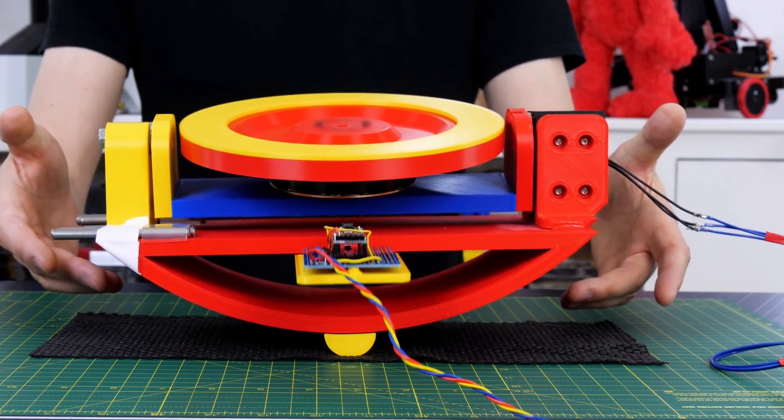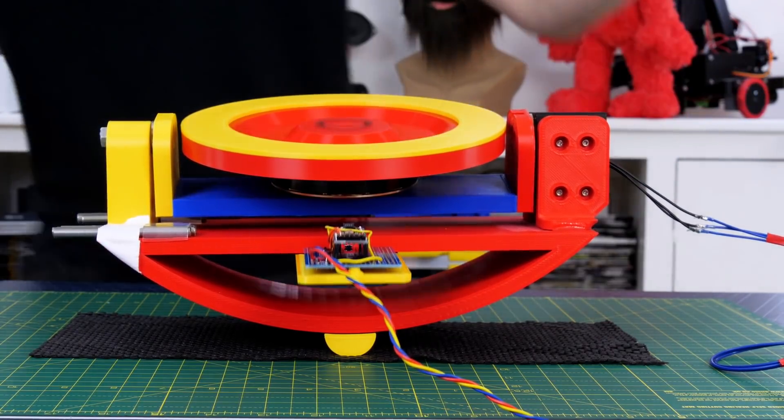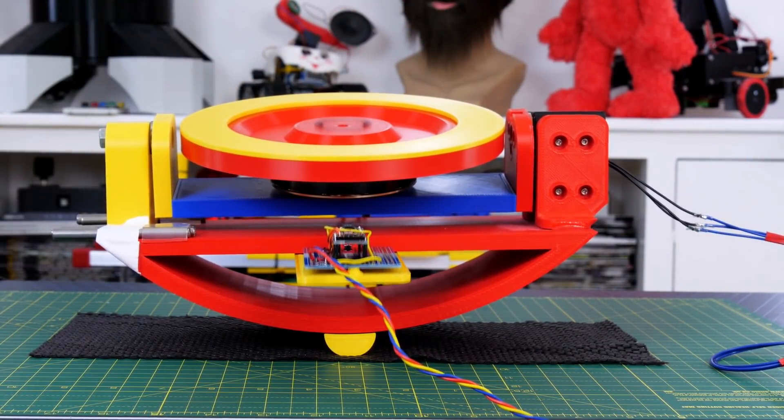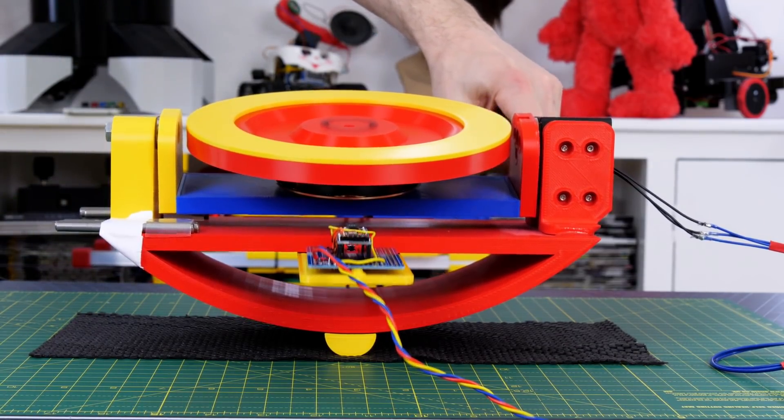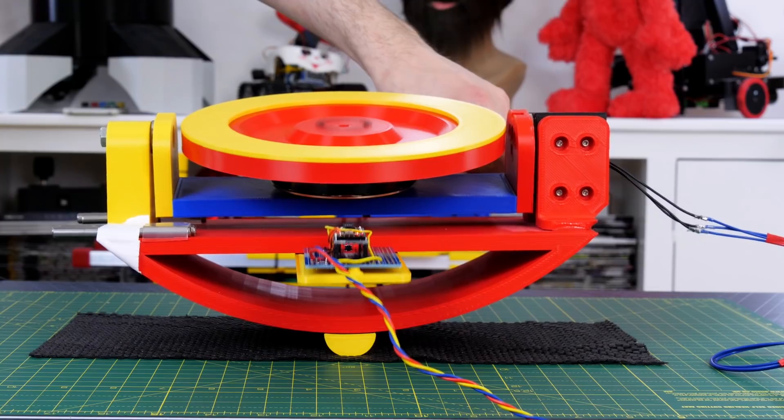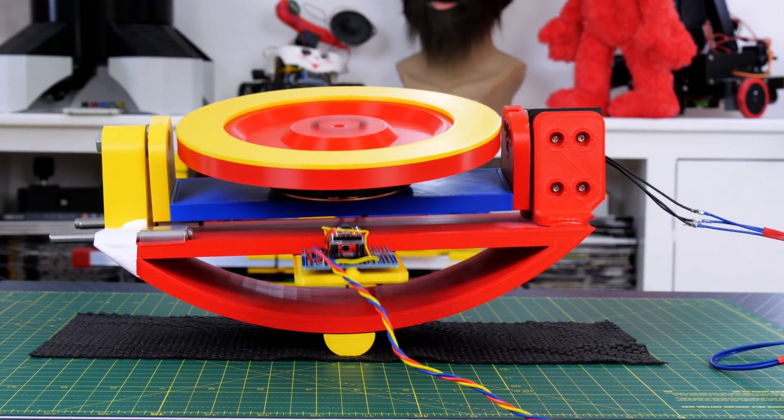And that's pretty amazing. You can see that it's totally unsupported and it just balances there. This version of the controller will survive light touches, so if I touch the mechanism we can see that it wanders a bit and the gyro compensates.